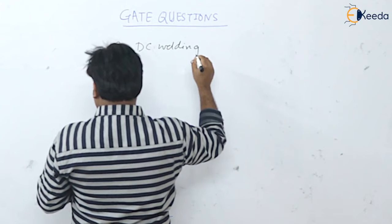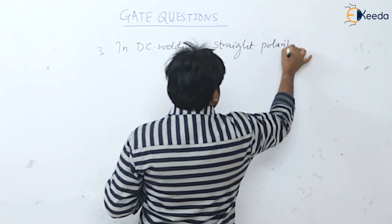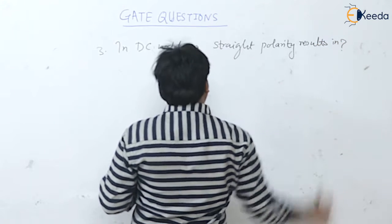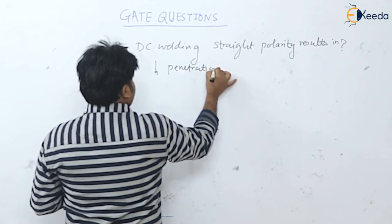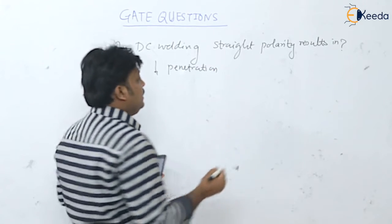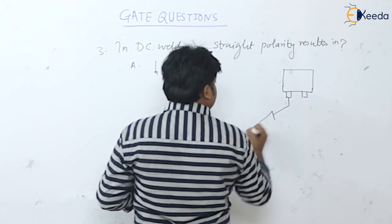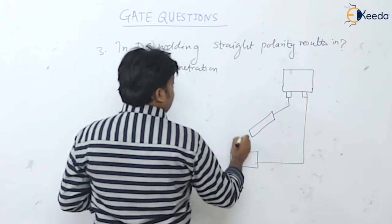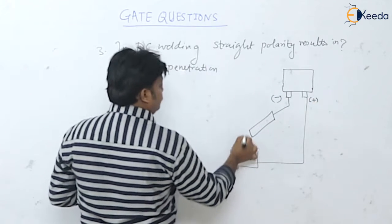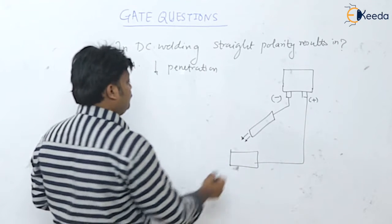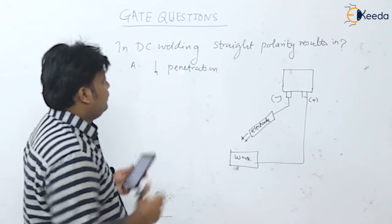Next question: the straight polarity results in — options are lower penetration, lower deposition rate, less heating at the work, and smaller weld pool. In straight polarity (DCEN), the electrode is negative and the work is positive. Flow of electrons is from cathode to anode, meaning from electrode to work.